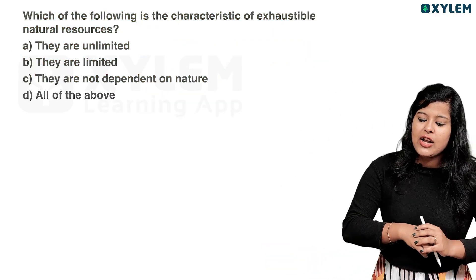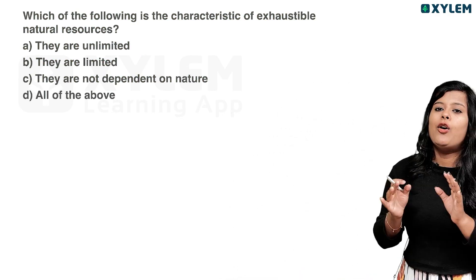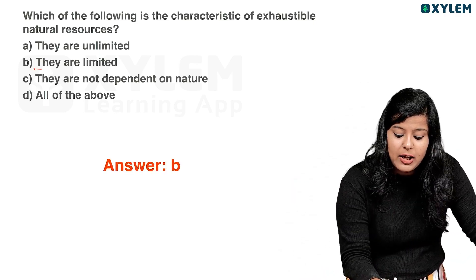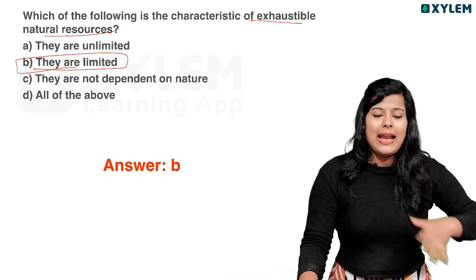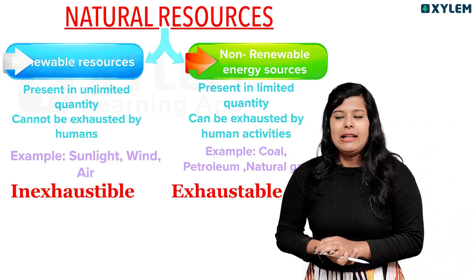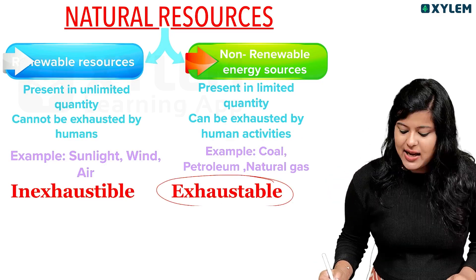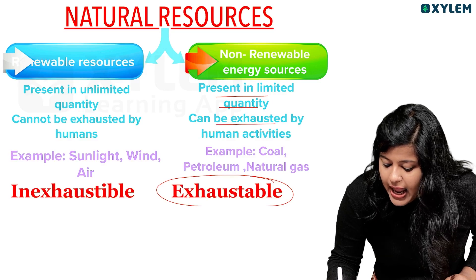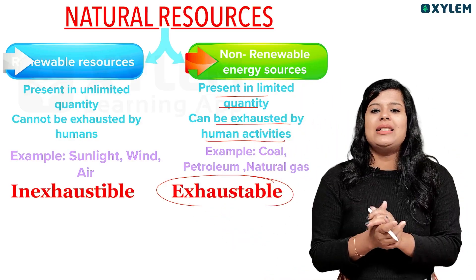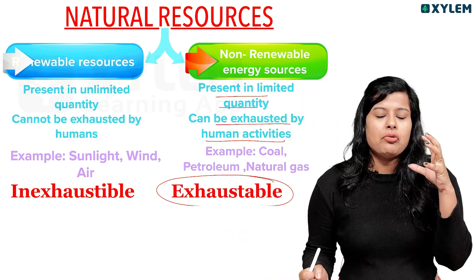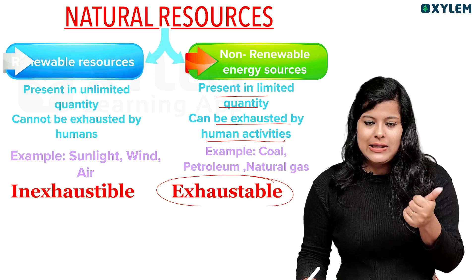Which of the following is a characteristic of exhaustible natural resources? They are unlimited, they are limited, they depend on nature, or all of the above? The answer is: they are limited. Exhaustible natural resources — for example, coal, petrol, diesel — these are exhaustible. Fossil fuels take millions of years to form, so they are exhaustible and non-renewable.